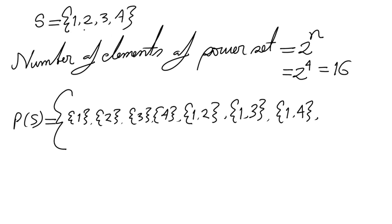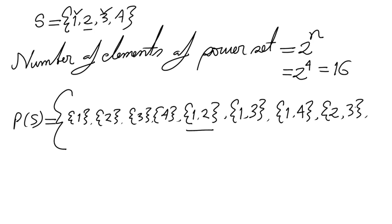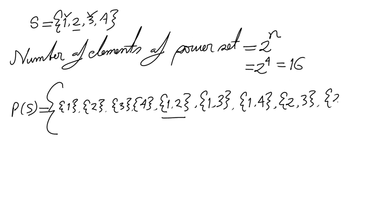Now we take 2. {2,1} is already listed, so we skip it. Instead we take {2,3}, then {2,4}. We have completed all acceptable combinations starting with 2.